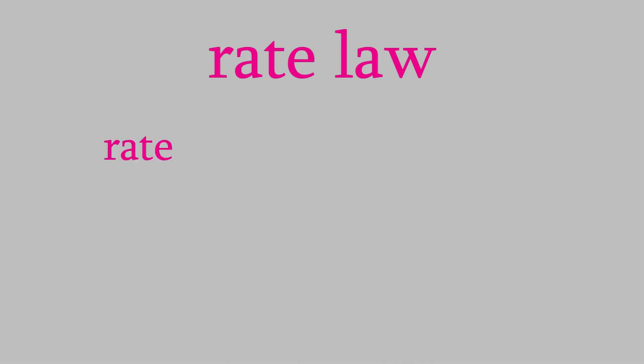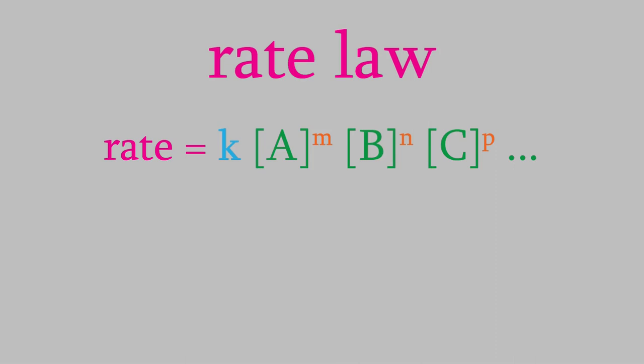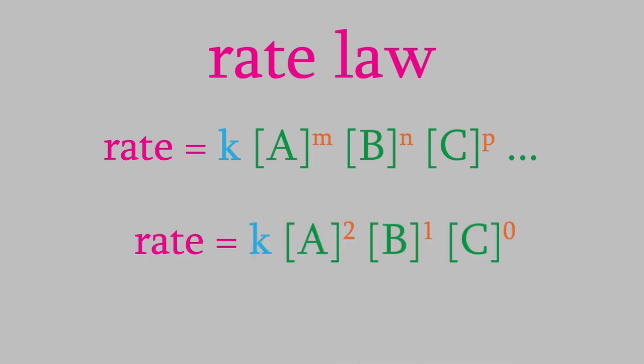Rate laws are always set up the same way: rate equals k times the concentration of each reactant, each raised to its own exponent. In our example we had three reactants, but we could have had fewer or more. Notice that the exponents in our example were all integers — that's usually true. It is possible to have exponents that are fractions or even negative numbers, but those are more complicated reactions and we won't see those in this class.